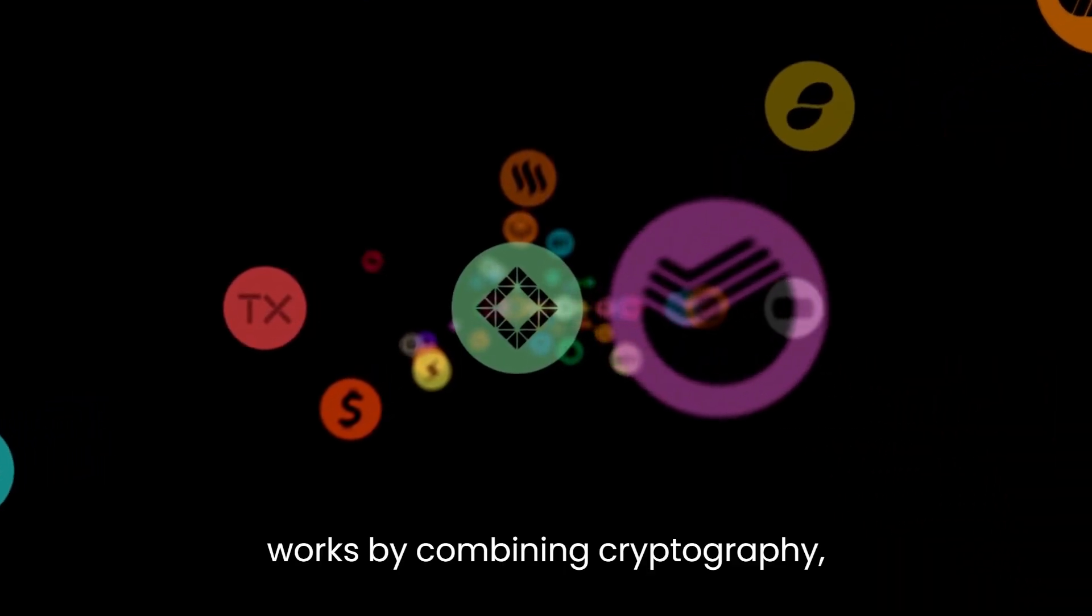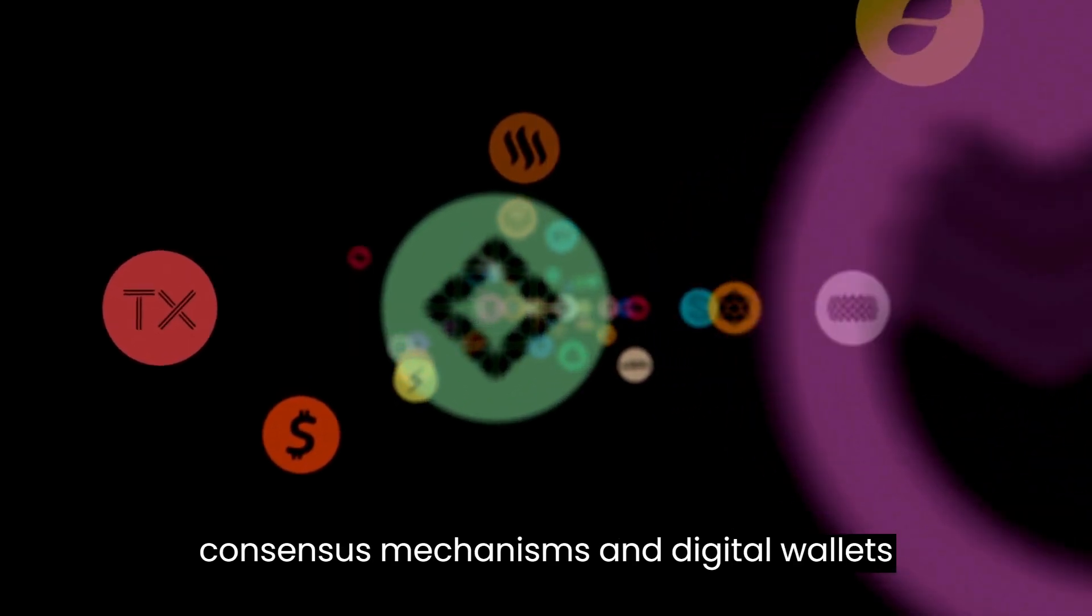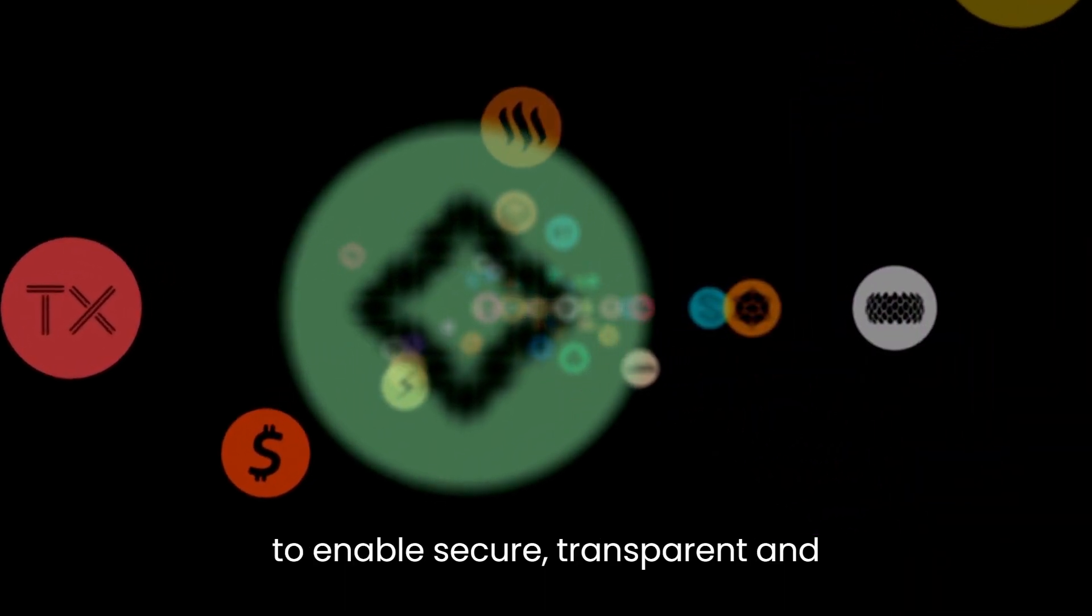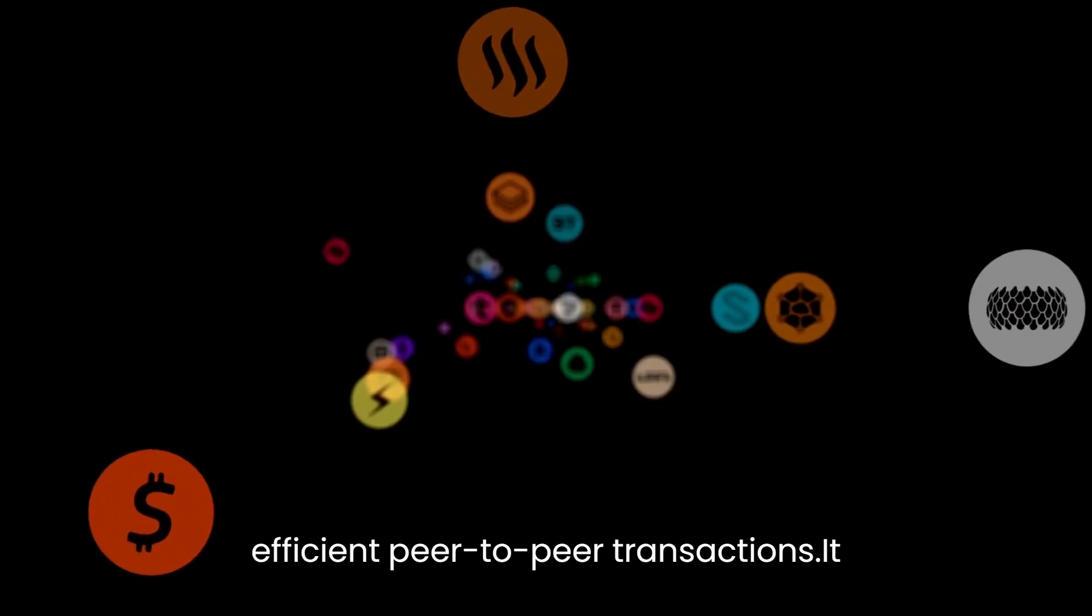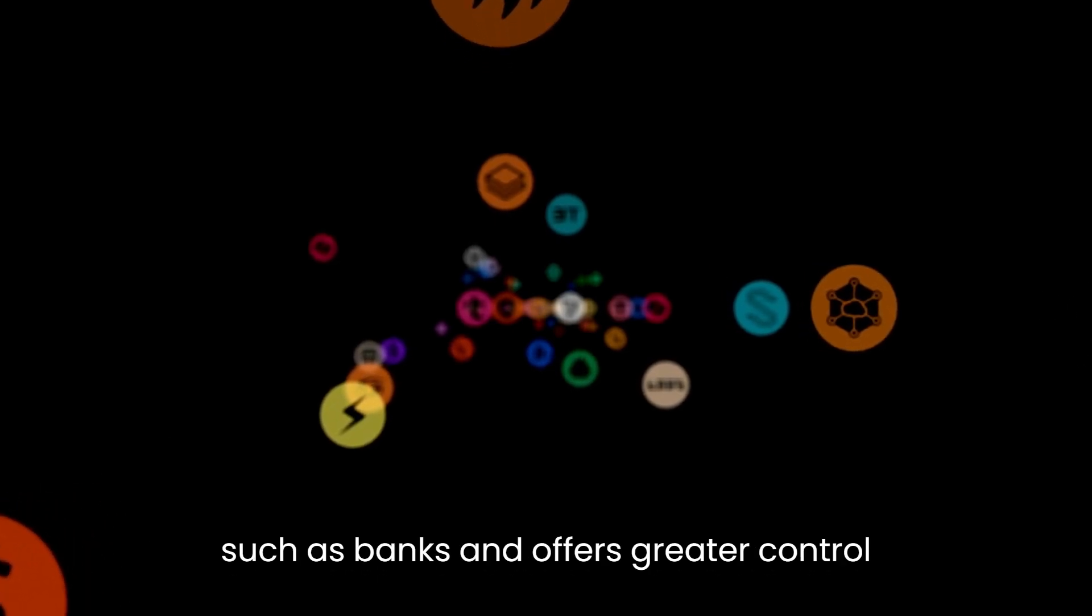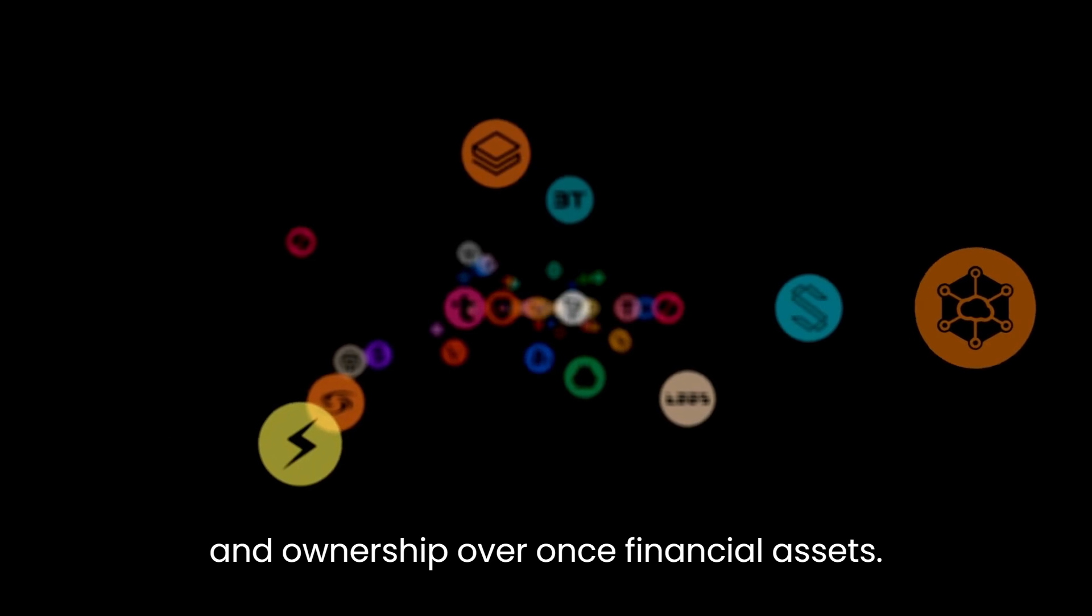Cryptocurrency works by combining cryptography, decentralized blockchain technology, consensus mechanisms, and digital wallets to enable secure, transparent, and efficient peer-to-peer transactions. It eliminates the need for intermediaries, such as banks, and offers greater control and ownership over one's financial assets.